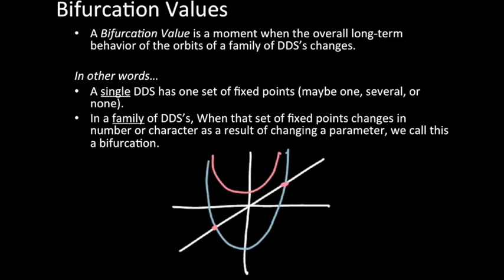So previously there were no fixed points at all, but now there are two. So somewhere along the way in translating this parabola, a new set of fixed points appeared. Somewhere along the way in translating these parabolas, we reached a bifurcation value. So let's take a look at another example.